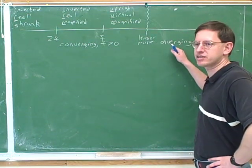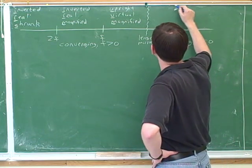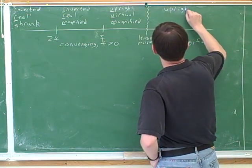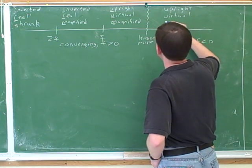Now, how about if you have a diverging device? Well, a diverging device is going to give us an image that is upright, virtual, and shrunk.